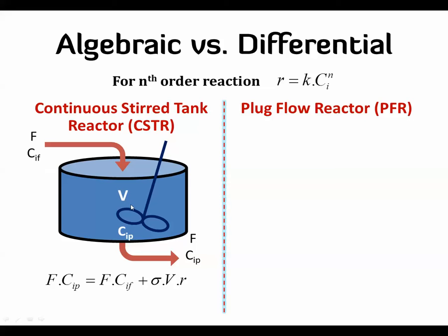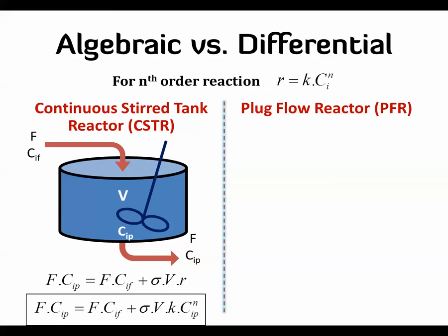The CSTR balance equation is: output F times concentration of product equals F times concentration of feed, plus sigma times V times r. This is the material balance we did before. It's very straightforward and simple — not differential, it's an algebraic equation. In the final form, the reaction rate term is k times c per n, with sigma being positive for products and negative for reactants.